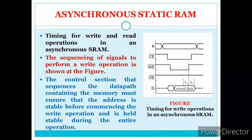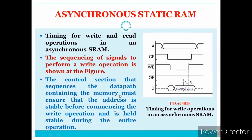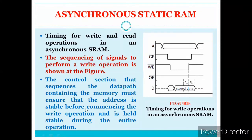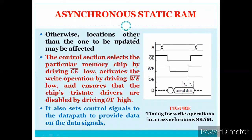First, chip enable must be active to enable the memory. Then write enable (WE bar) goes active. Data is stored at the rising edge, satisfying setup time before the edge and hold time after. The address must be stable before commencing the write operation and held stable during the entire operation — otherwise data may be written to an unintended location.